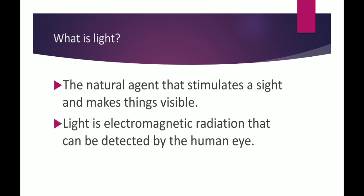What is light? The natural agent that stimulates sight and makes things visible. Light is an electromagnetic radiation that can be detected by the human eye. What are electromagnetic radiations? Electromagnetic radiations are produced in a medium by fluctuating electric field and magnetic field. So you will learn more about electromagnetic radiation in higher classes.